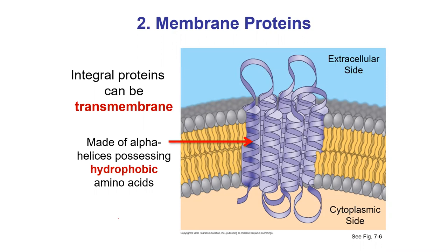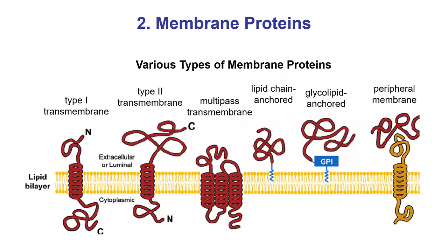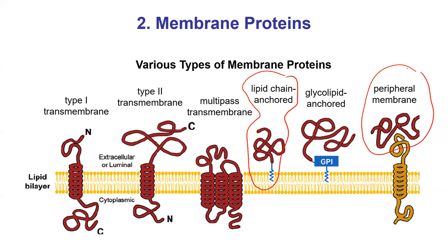Many membrane proteins are also described as transmembrane, used synonymously with integral. They have alpha helices loaded with hydrophobic amino acids — about 20 amino acids to span across a membrane. There are many varieties: single-pass, multi-pass transmembrane proteins, and some anchored by a lipid where the protein is covalently bound to a phospholipid. Peripheral proteins are attached not to the membrane directly but to another membrane protein.